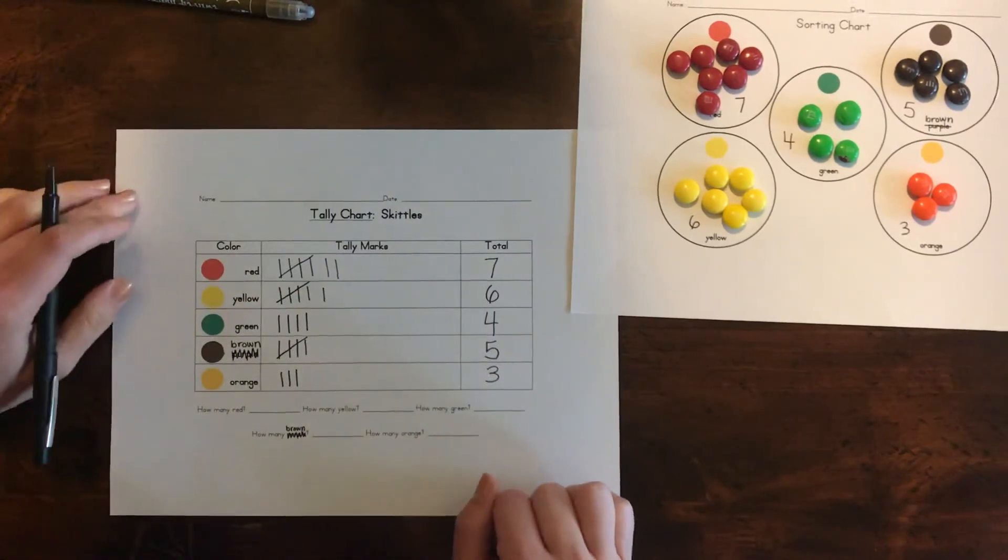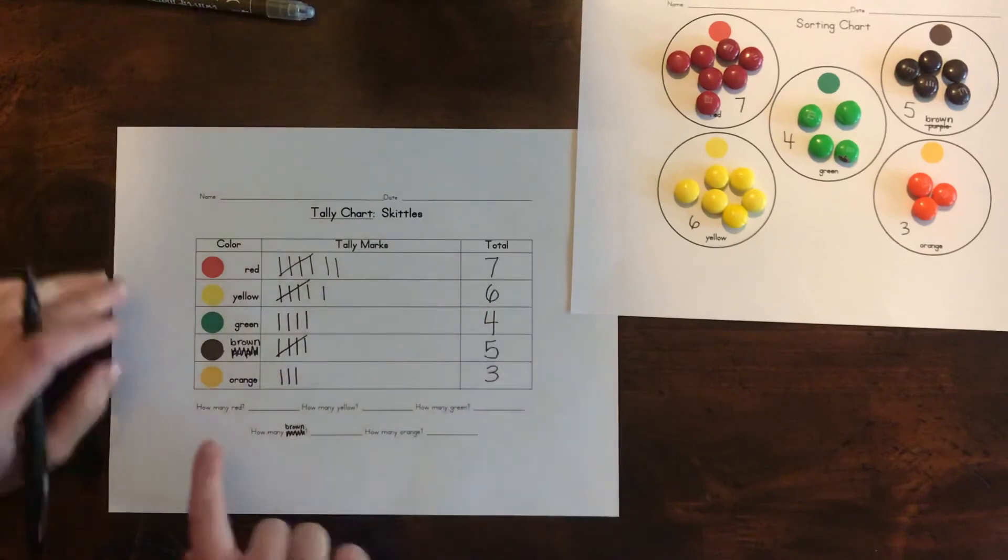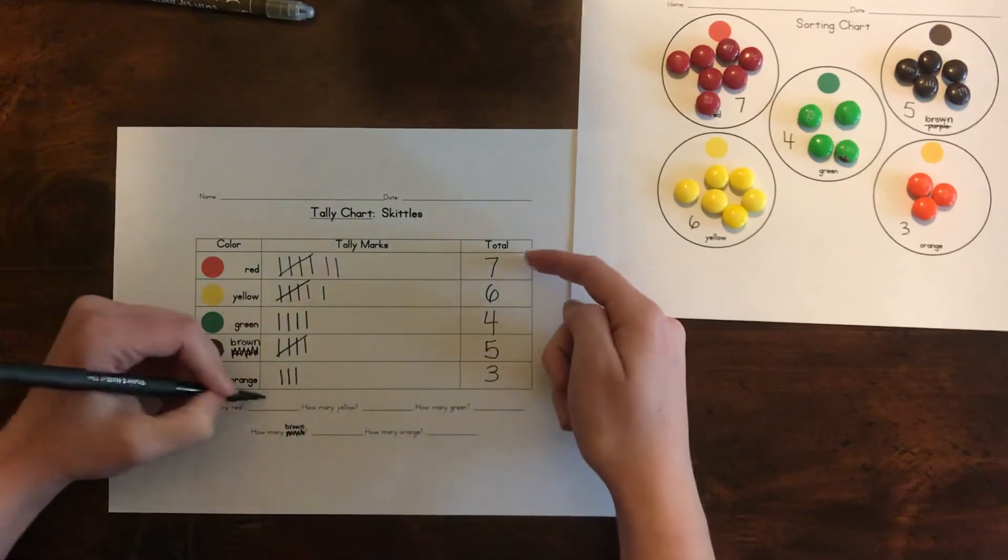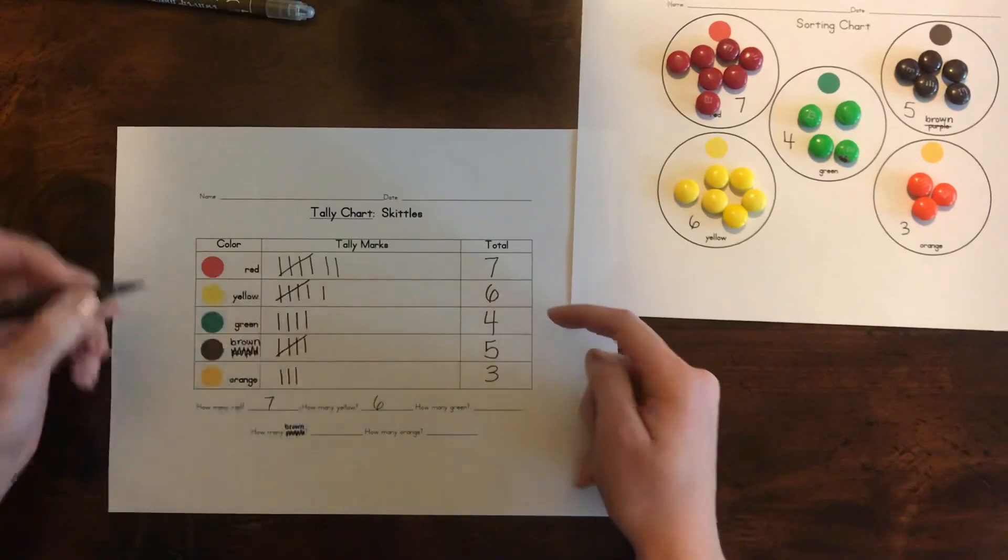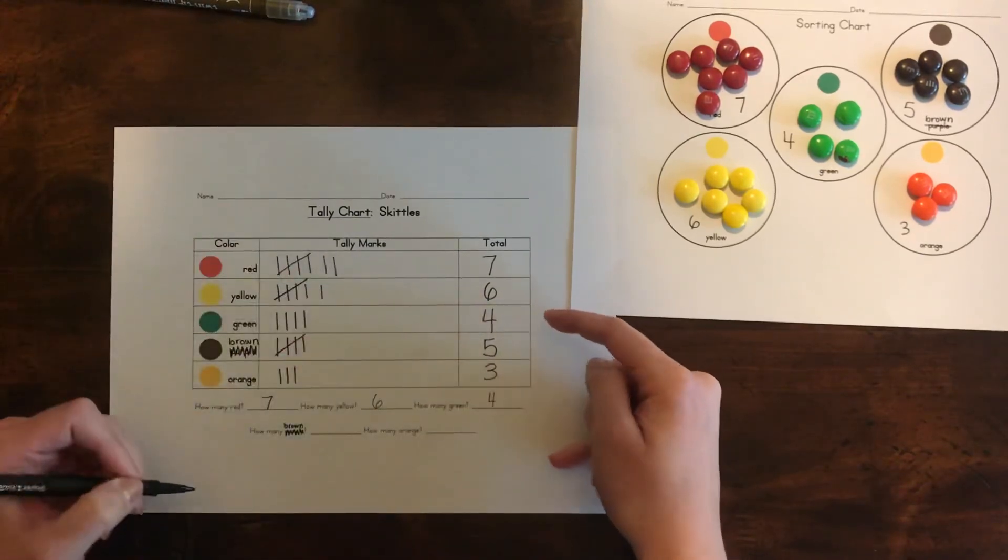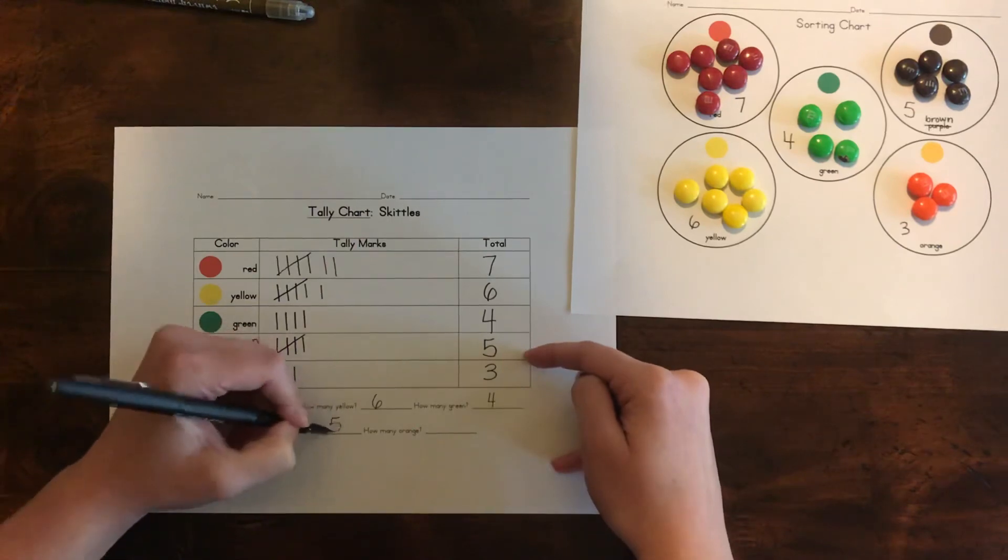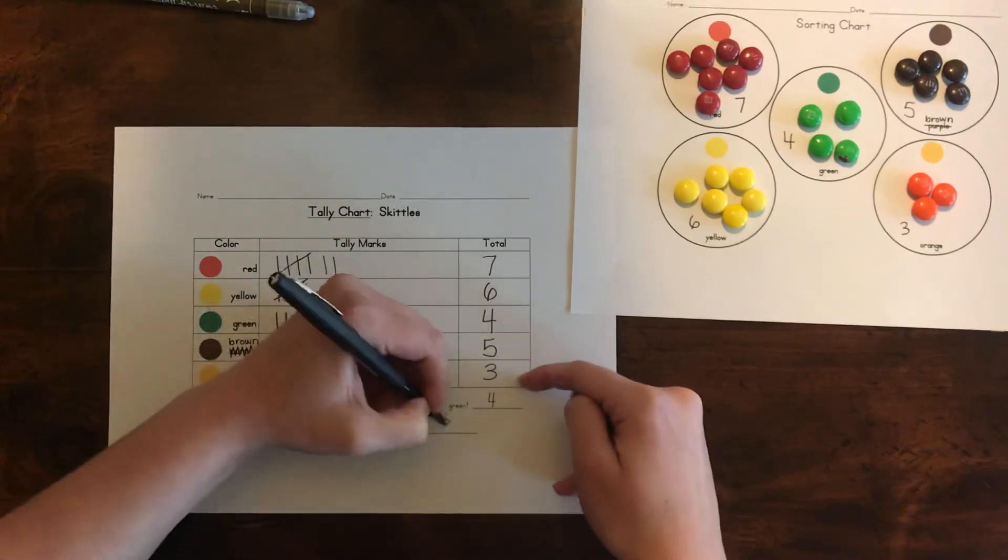Now this one will help us quickly look at the number. So how many red? That was easy. Seven, right? How many yellow? Six. How many green? Four. How many brown? Five. How many orange? Three.